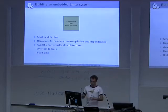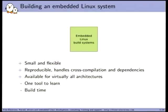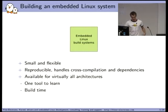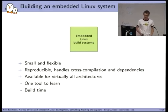This intermediate solution uses tools that automate the process of building a Linux system from source code all the way to a completely working system. Since we build from source, we can customize as we want and build very small, flexible systems. The process is reproducible because we have a tool instead of just command lines. It handles cross-compilation and dependency issues, is available for all architectures, though it does require learning the tool and waiting for the build to finish.